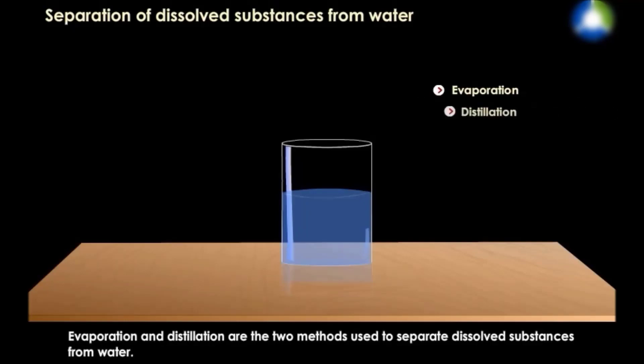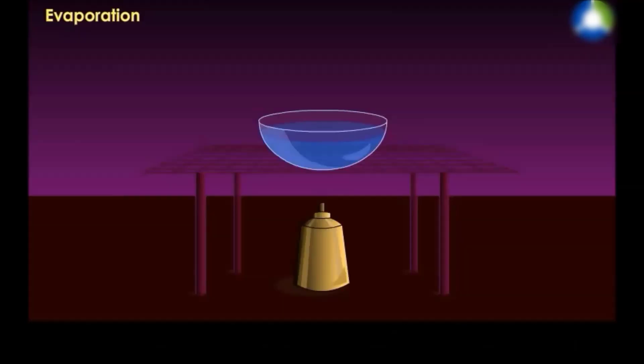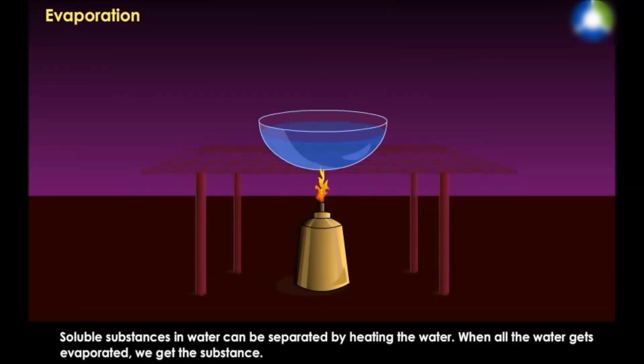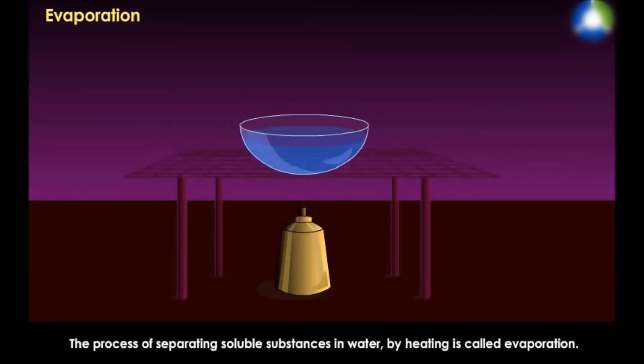Now evaporation and distillation are the two methods which are used to separate dissolved substances from water. Soluble substances in water can be separated by heating the water. When all the water gets evaporated, we get the substance. So the process of separating soluble substances in water by heating is called evaporation.